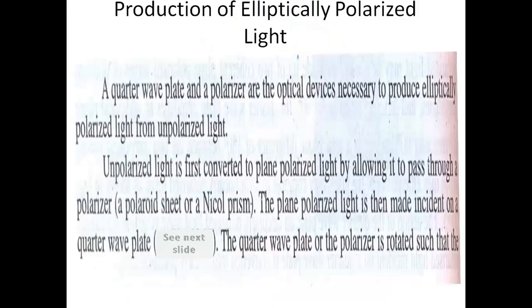For producing elliptically polarized light, we need optical devices like a polarizer and a quarter wave plate. An unpolarized light can be converted into polarized light with the help of a polarizer — which can be a Nicol prism. When plane polarized light is produced by the polarizer, it can then be used to produce elliptically polarized light with the help of a quarter wave plate.